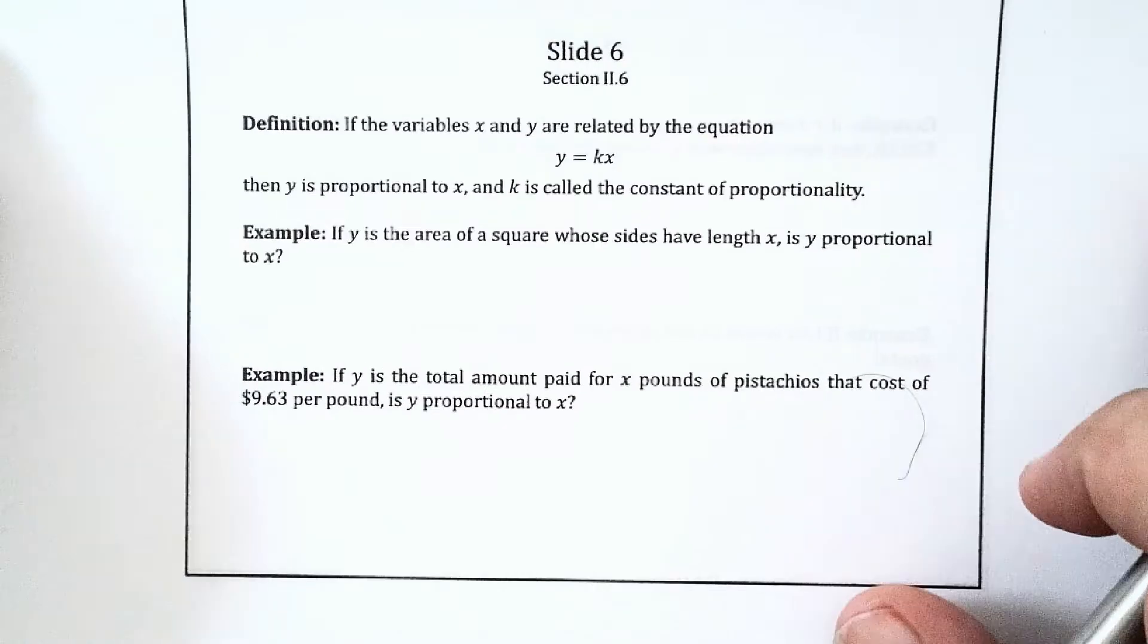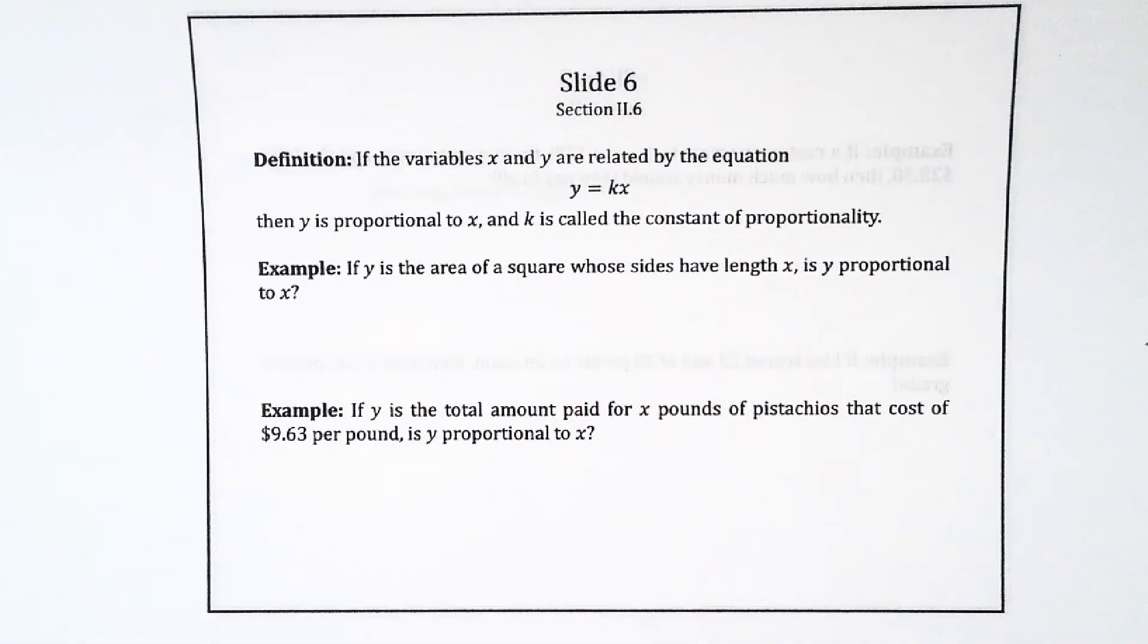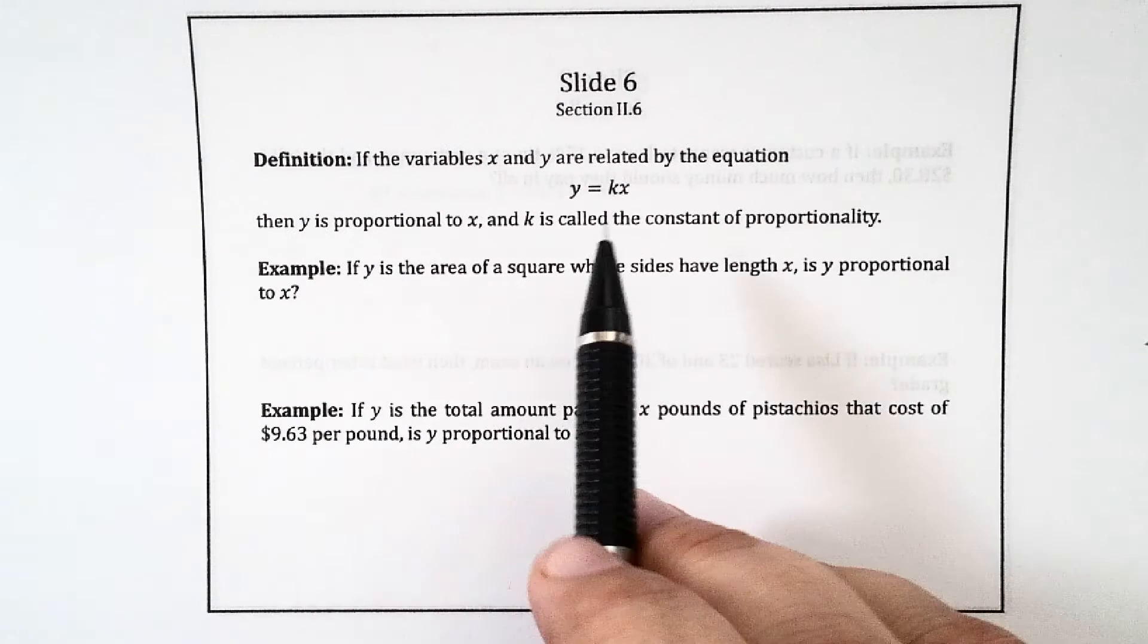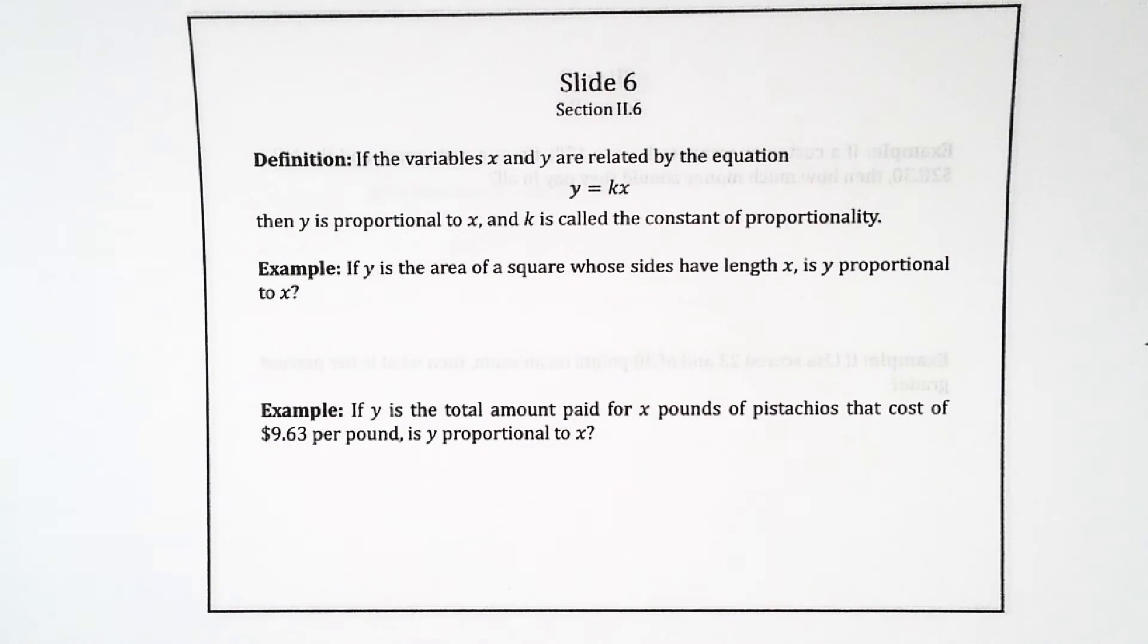In general, if the two variables x and y are related by this equation y equals k times x, where k is a constant, then y is proportional to x, and k is called the constant of proportionality. So basically, if you want to determine whether two amounts are proportional to each other, write an equation that relates them. If that equation has this very simple form, then they're proportional. Another way of thinking about it is if the quotient of the two amounts is always the same.